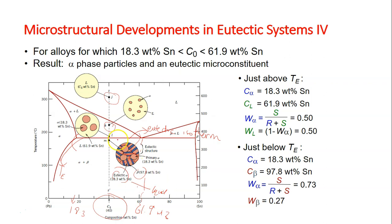The liquid in the alpha plus L region—this liquid part—after crossing the isotherm, will become the alternating alpha plus beta layers.